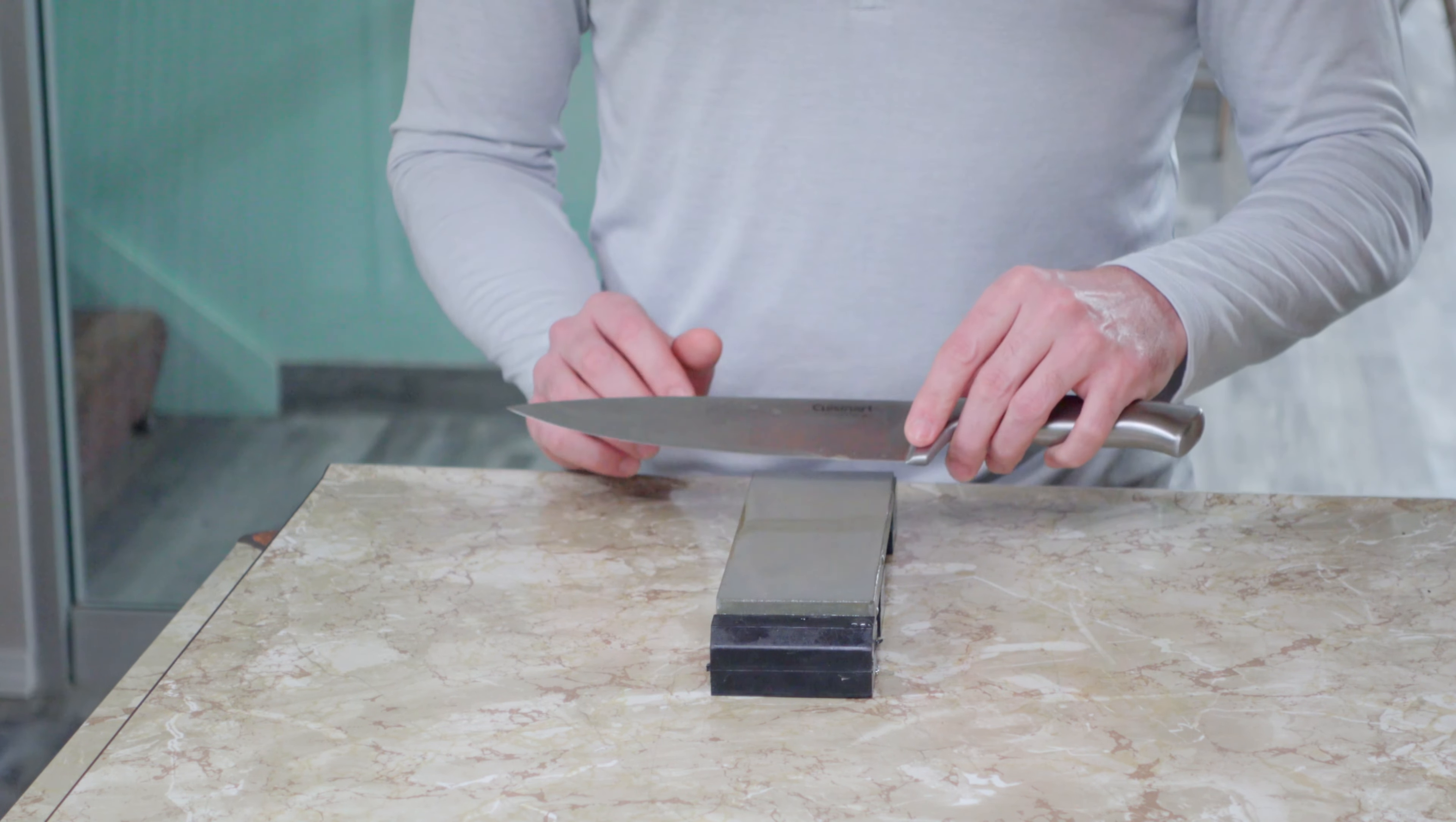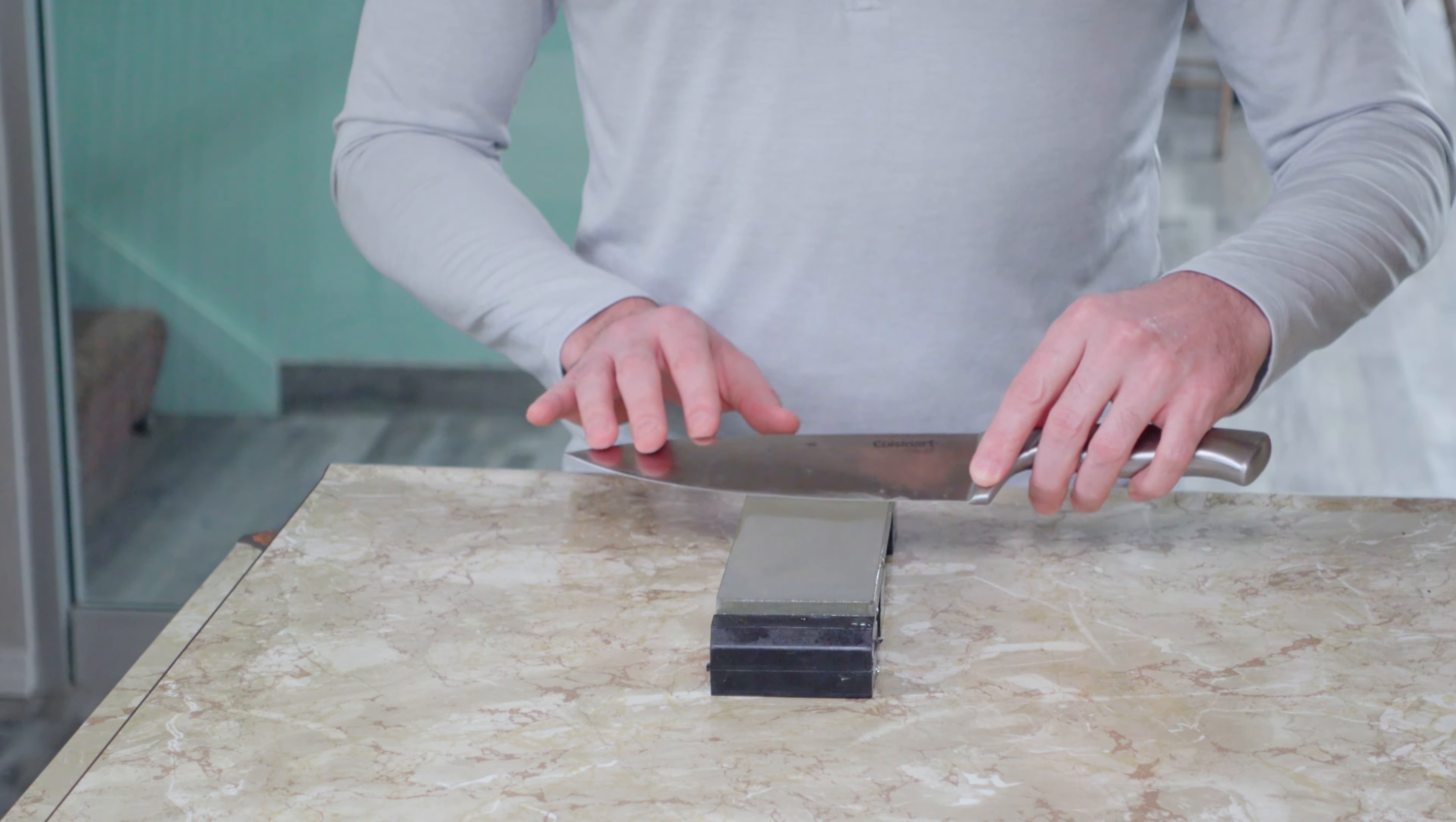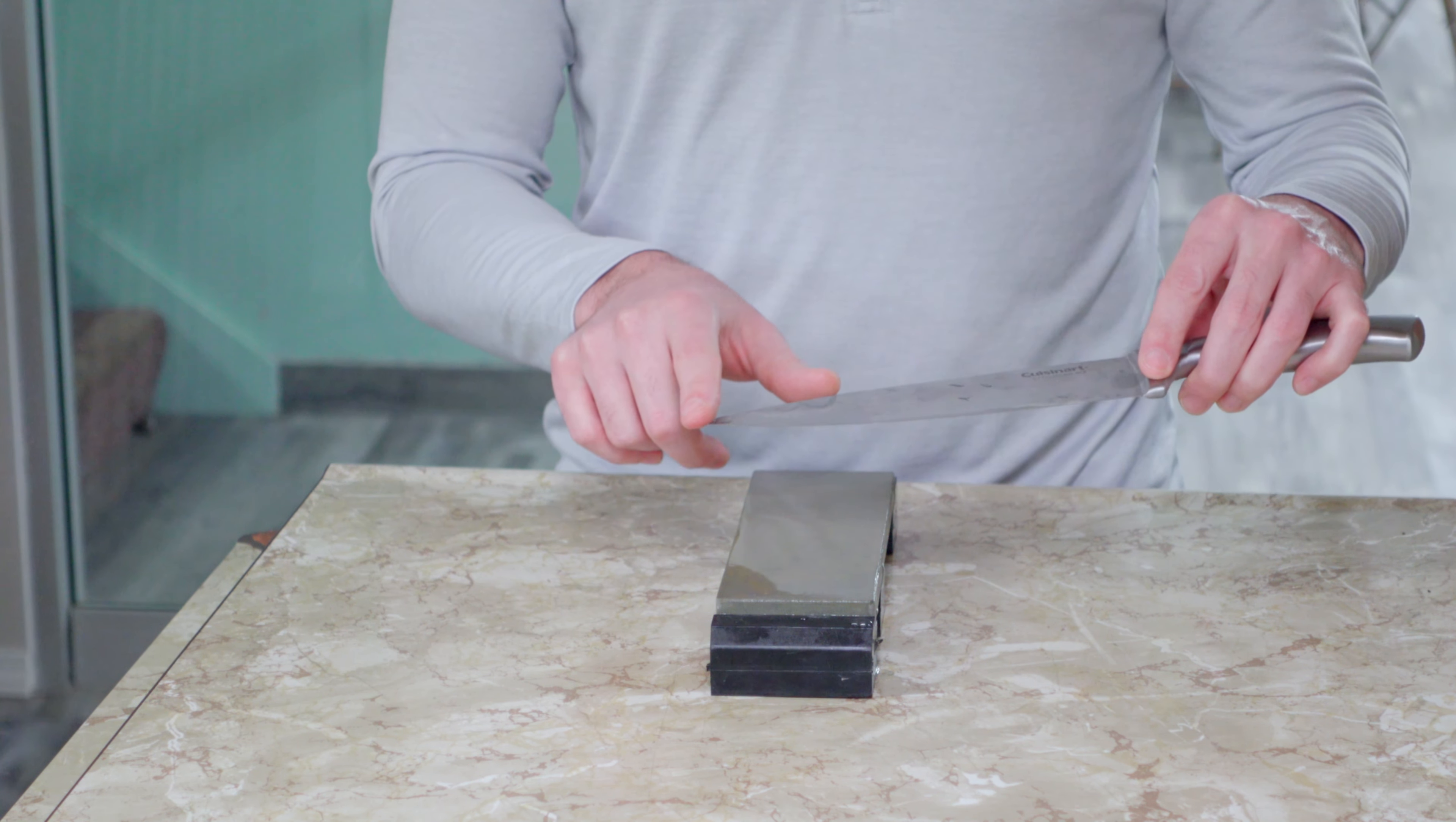The way to compensate for this is to raise the back of the knife up once you get to the curved area. What I'll do is drag the knife across the stone, and once I see where the belly is starting, I'm going to start raising the knife slowly to hit all that belly and the tip.